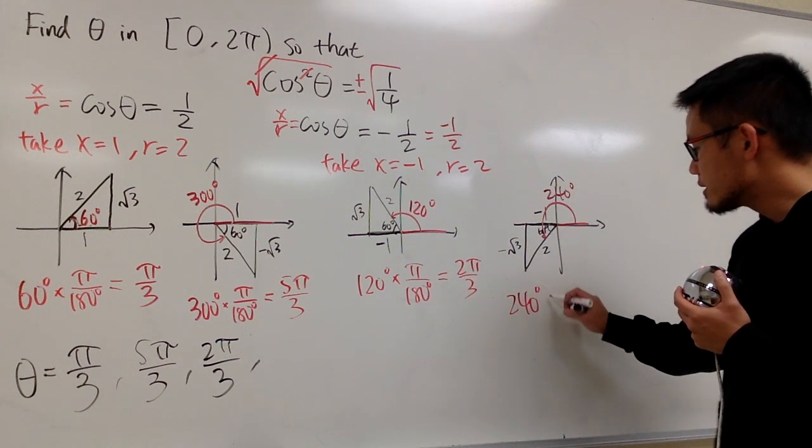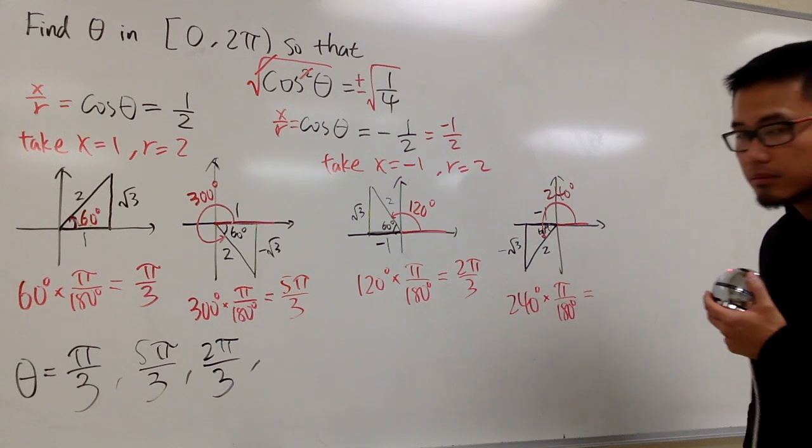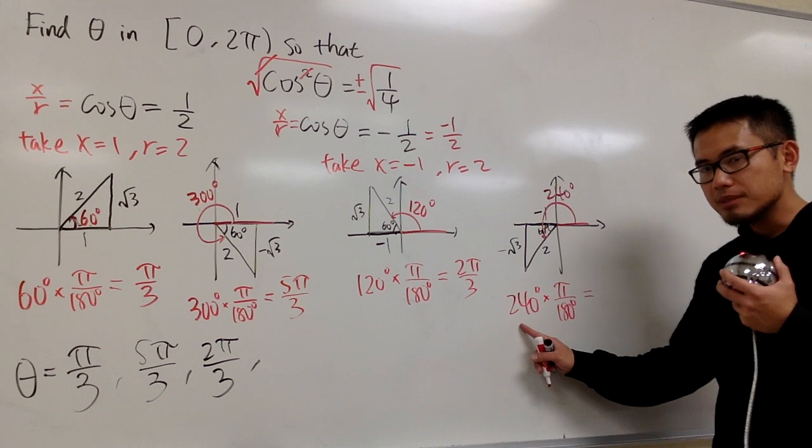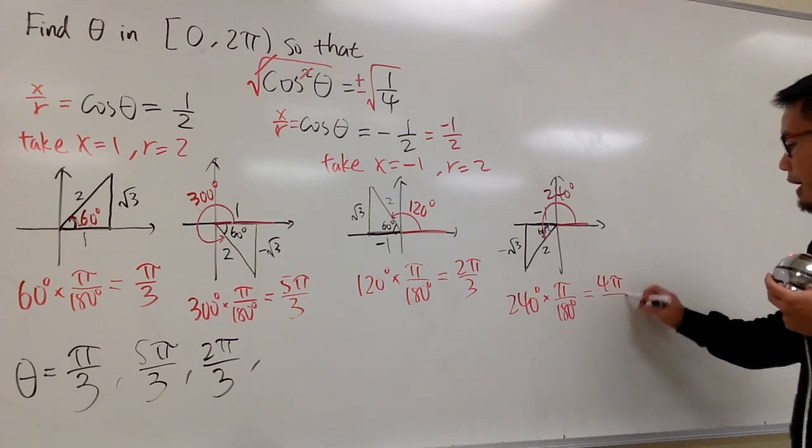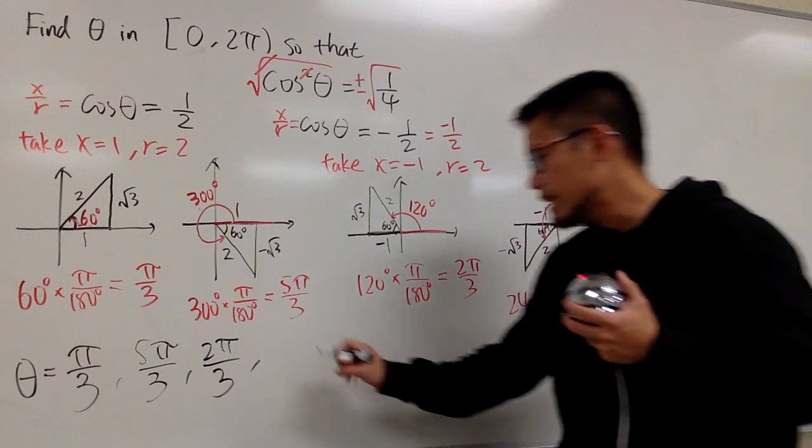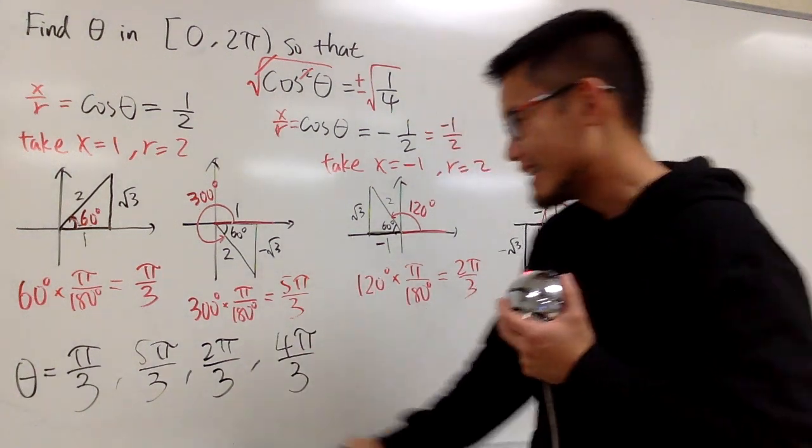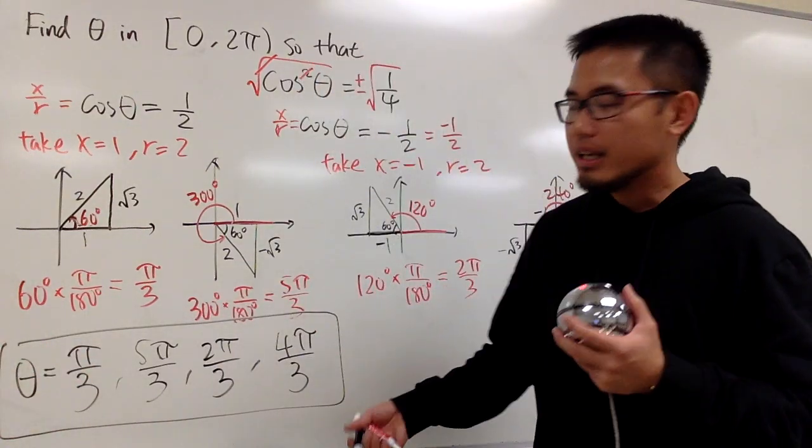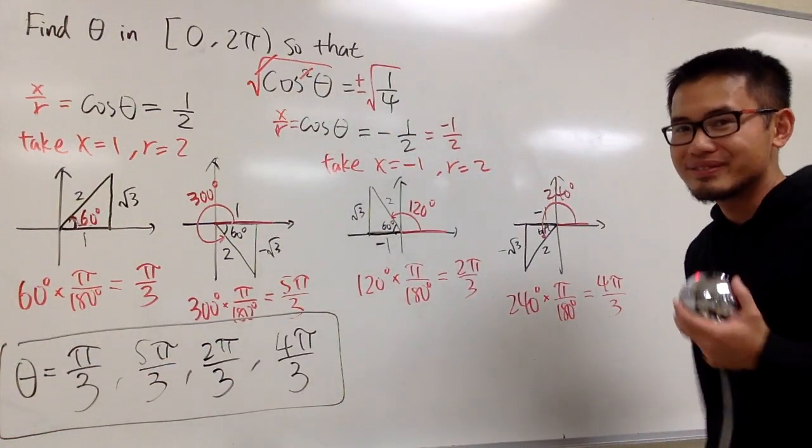And now, 240 degrees multiplied by π over 180. 60 goes into 240 four times. 60 goes into 180 three times. So altogether, it is 4π over 3. And that's the last answer, 4π over 3. That's it. And the order of how you present the answer doesn't matter. This is good enough.